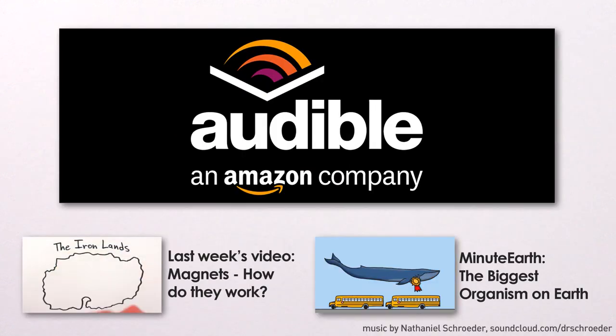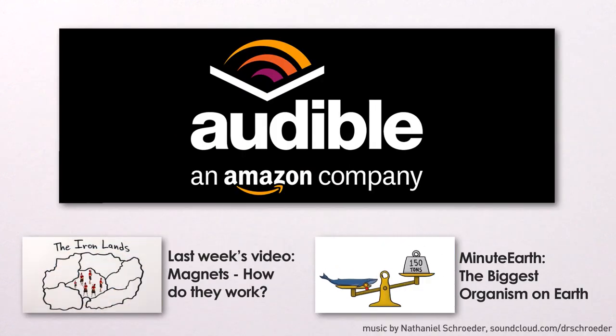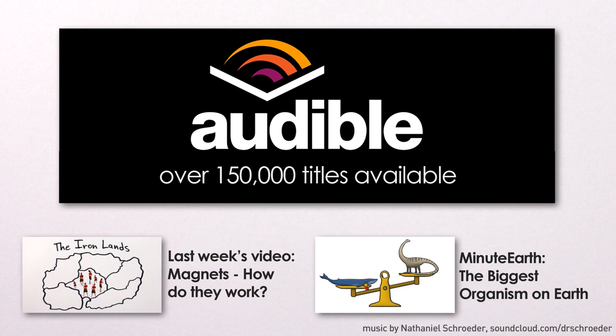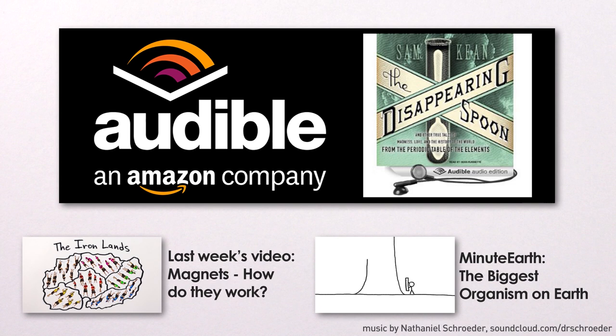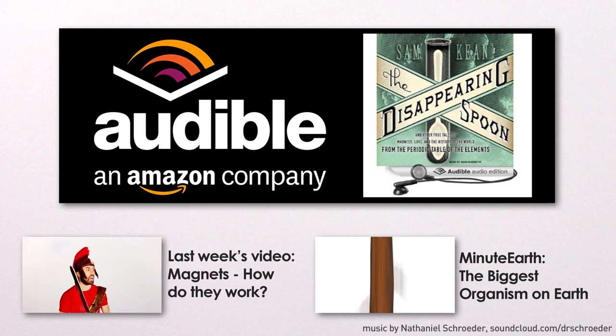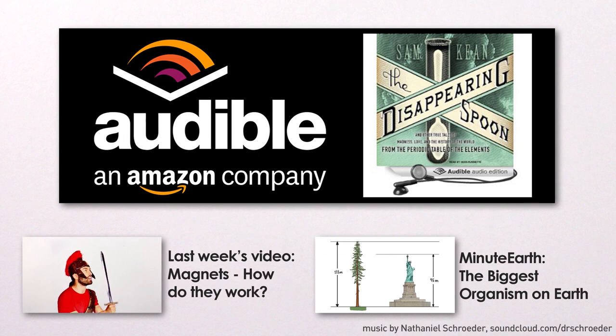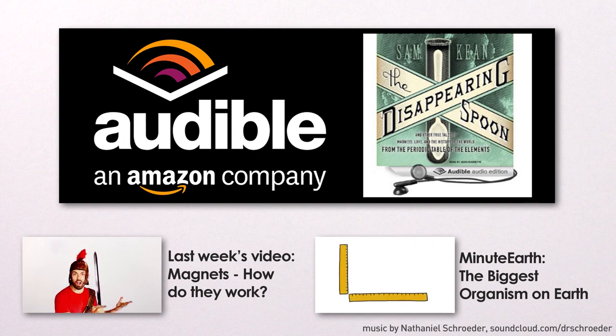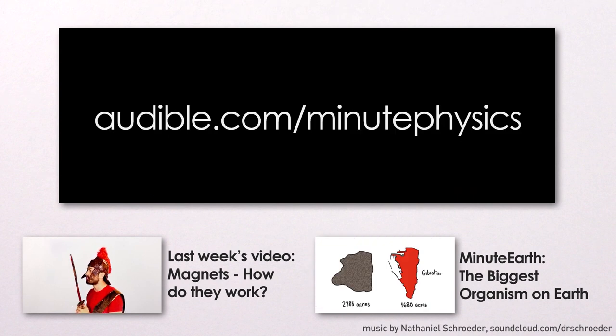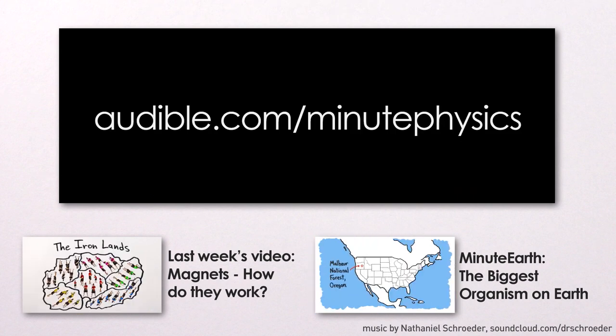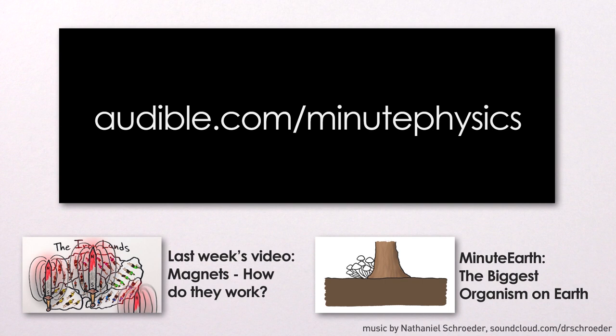This episode of MinutePhysics is supported by Audible.com, the leading provider of audiobooks across all types of literature, including fiction, nonfiction, and periodicals. To delve deeper into the stories and science behind the periodic table, check out The Disappearing Spoon and other true tales of madness, love, and the history of the world from The Periodic Table of the Elements, by Sam Keen. Man, that's a long title. You can download this audiobook, or another of your choice, for free at audible.com/minutephysics. Again, thanks to Audible for making it possible for me to keep producing MinutePhysics, and for giving you a free audiobook at audible.com/minutephysics.